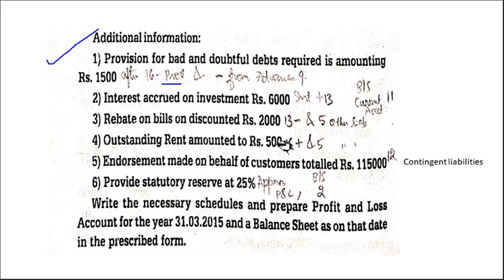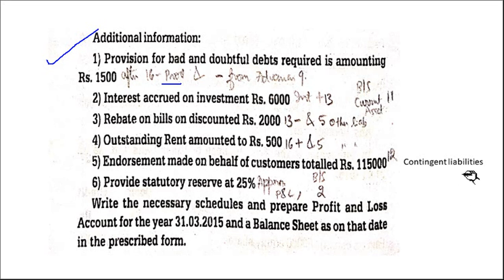Outstanding rent — see, how you do it in the horizontal balance sheet profit and loss account. Same thing: in the profit and loss account debit side, write rent, add outstanding rent. Then in the balance sheet, liability side, Schedule 5. Then endorsement made on behalf of customers — rupees 15,000. This we have to write under contingent liabilities, Schedule 12, because we have made the endorsement on behalf of our customers.